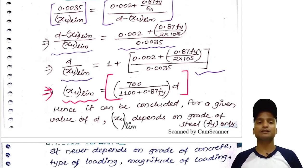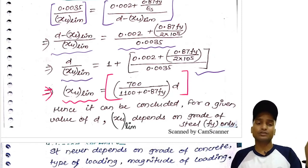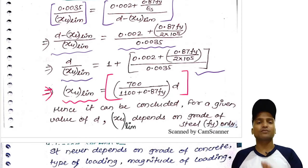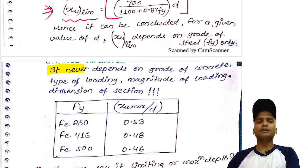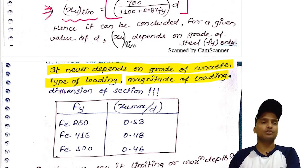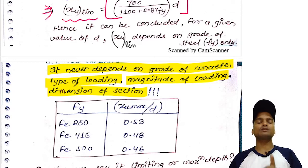To repeat: for a given effective depth d, xu,lim for any beam cross section depends only on the grade of steel fy. It does not depend on the grade of concrete fck, the type or magnitude of loading, or the dimensions of the cross section — only on the grade of steel.